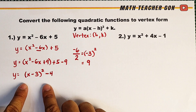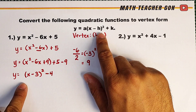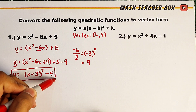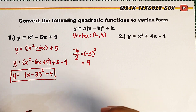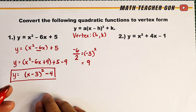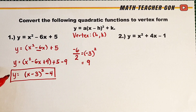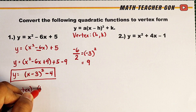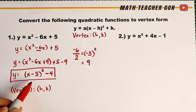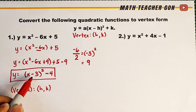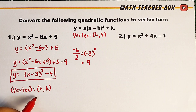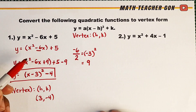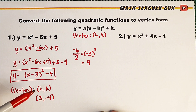We have now converted this function into its vertex form. The correct answer is y is equal to the quantity of x minus 3 squared minus 4. As for the vertex, we have h comma k — this is your h and this is your k. But be careful: instead of writing negative 3, you reverse it to get its additive inverse, which is positive 3. The value of k as-is is negative 4. So the vertex of this quadratic function is located at 3 comma negative 4.